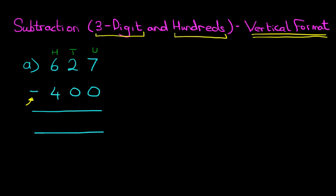Now as always we start on the right hand side first. 7 minus 0 is 7. The tens — 2 minus 0 is 2. And lastly we've got the hundreds. We have 6 minus 4. 6 minus 4 is 2. The only digit which changed was the hundreds. So therefore 627 minus 400 is 227.